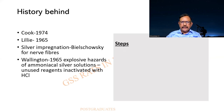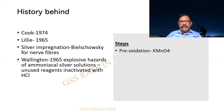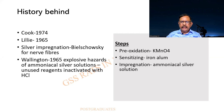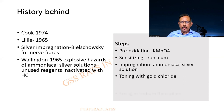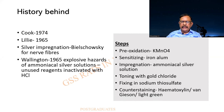What are the steps involved? These are the important ones to have in mind. 1. Pre-oxidation with KMnO₄ (potassium permanganate). 2. Sensitizing by iron alum. 3. Impregnation with ammoniacal silver solution. 4. Toning with gold chloride. 5. Fixing in sodium thiosulphate. And finally, counter-staining with any of the ones mentioned. Please do remember these things — they shall be asked for in the exam.